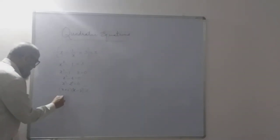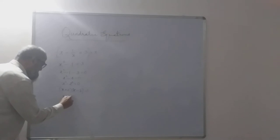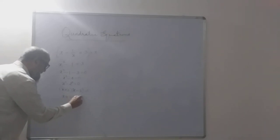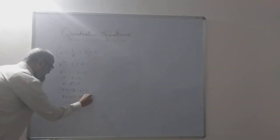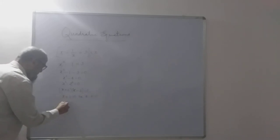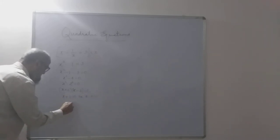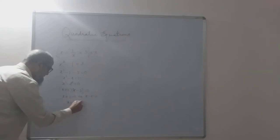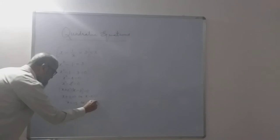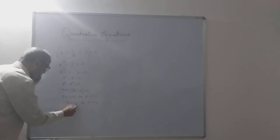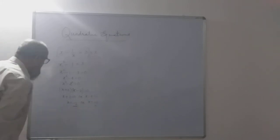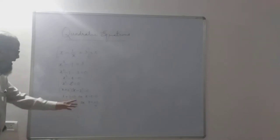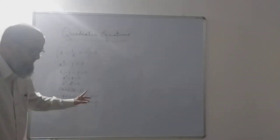Either x plus 2 is 0 or x minus 2 is 0. If x plus 2 is 0, then x is minus 2. If x minus 2 is 0, x is equal to plus 2. So these are the roots - one root is minus 2 and the other root is plus 2. This is how it should be done.